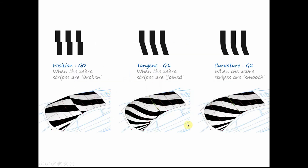More examples — this actually comes from, if I'm not mistaken, our Alias video. Again, zebra stripe analysis. You've got a G0 corner here, and the zebra stripes are not lining up with each other — see what's happening up here, the zebra stripes are not lining up.